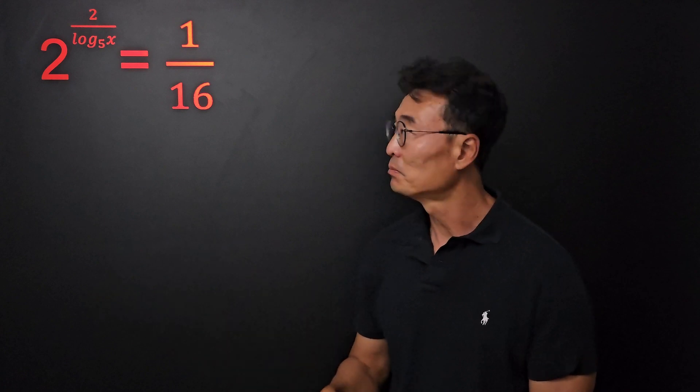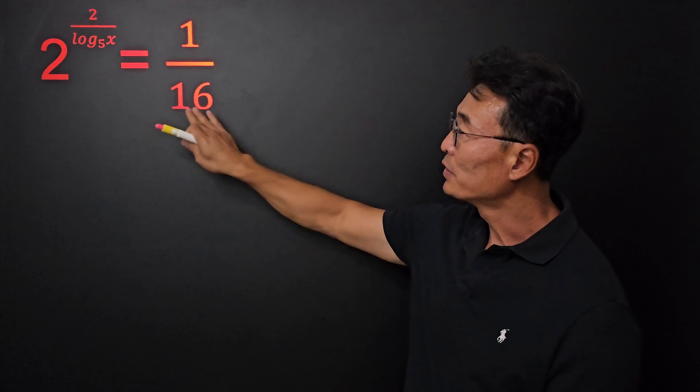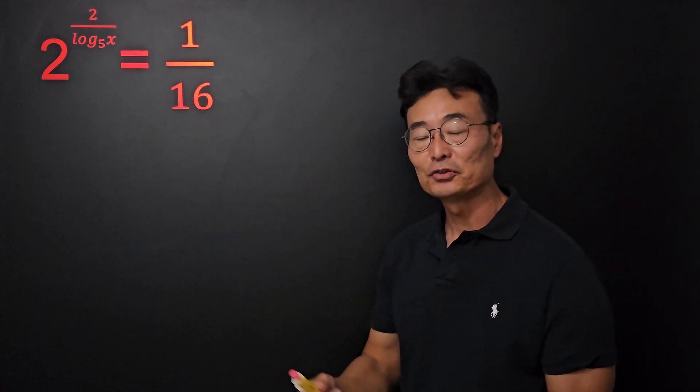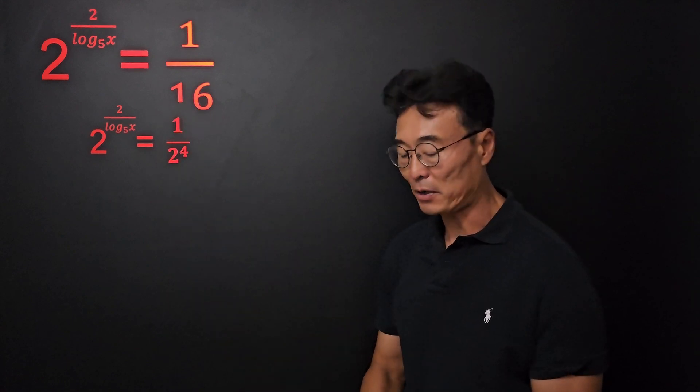Let's begin. Notice that 2 is the base and we know that 16 is 2 to the fourth power. So let's go ahead and change that 16 into 2 to the fourth power. That's going to be our first step.